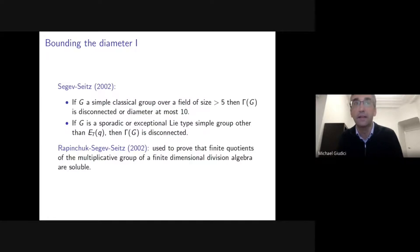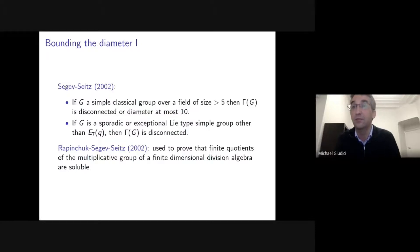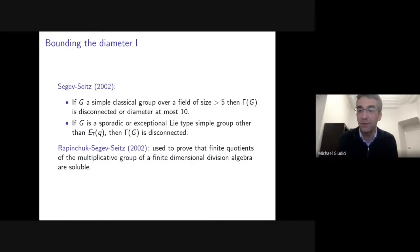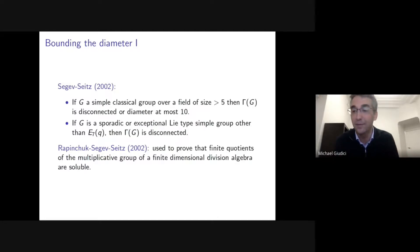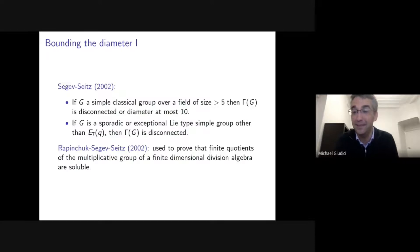Together with Pudentsov, they used these diameter results to prove that finite quotients of the multiplicative group of a finite-dimensional division algebra must be soluble. That's quite surprising: a question about division algebras and multiplicative groups can be converted into a question about diameters of commuting graphs. It's another unexpected appearance of commuting graphs.